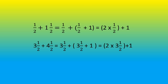3 and half plus 4 and half. 4 and half is 3 and half plus 1. Therefore this can be written as 3 and half plus 3 and half plus 1. Here, 2 three-and-halves are there, therefore this can be written as 2 times 3 and half plus 1.